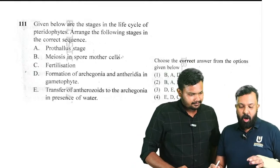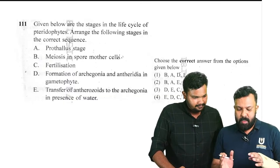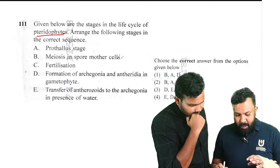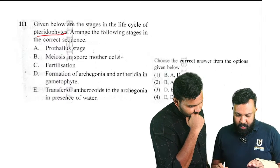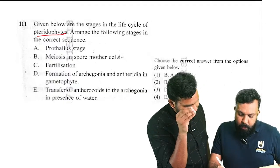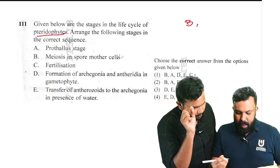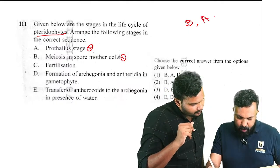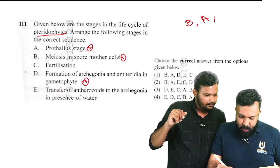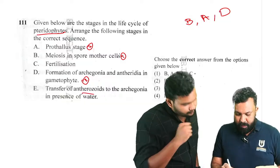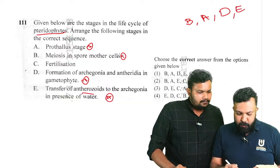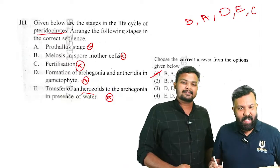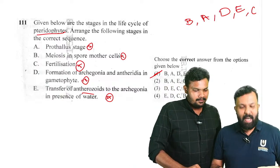Question number 111: given below are the stages in the life cycle of pteridophytes. Arrange them in the correct sequence. The stages are: spore mother cells (B), spore formation and germination to pro-thallus stage (A), pro-thallus forming sex organs — antheridia and archegonia (D), transfer of antherozoids and fertilization (E), and zygote development (C). So the correct sequence is B, A, D, E, C — option one is the right answer.